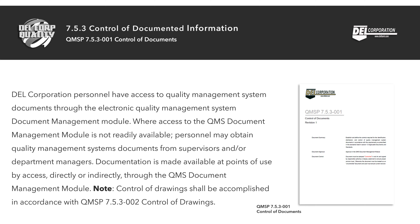Dell Corporation personnel have access to quality management system documents through the electronic quality management system document management module. Where access to the QMS document management module is not readily available, personnel may obtain quality management system documents from supervisors and/or department managers. Documentation is made available at points of use by access directly or indirectly through the QMS document management module.